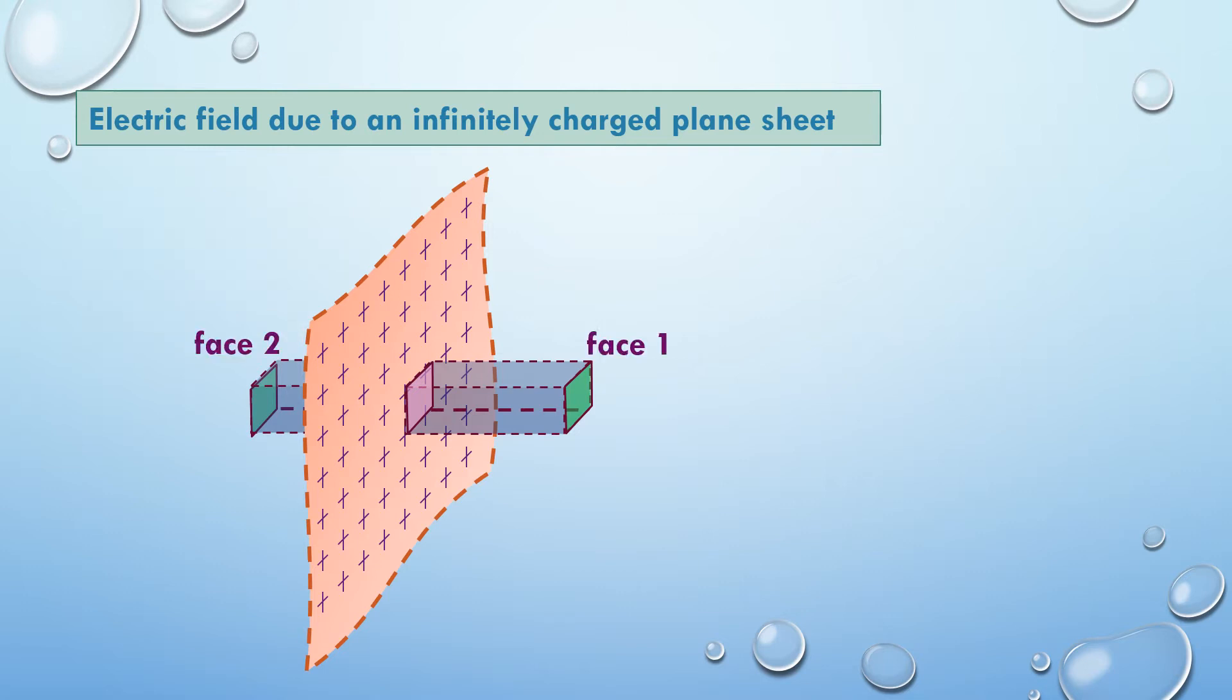Now this Gaussian surface has two faces where we have shaded them in green color to show us face 1 and face 2. The area on both sides is the same where we have considered the area as delta S.